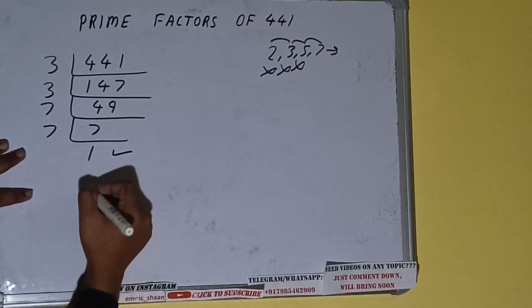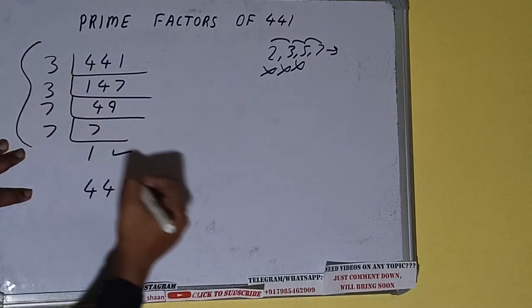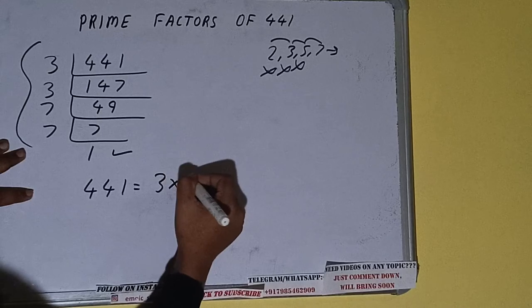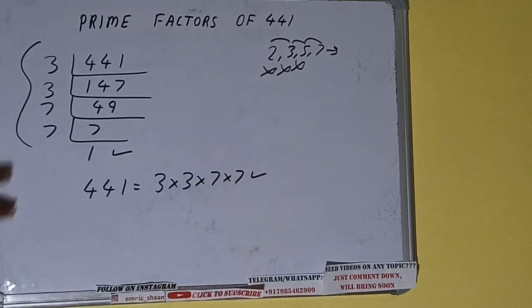And do one last thing. The prime factors of 441 will be whatever we have on the left-hand side, that is 3 × 3 × 7 × 7. That will be the answer. So this is all about prime factors of 441.